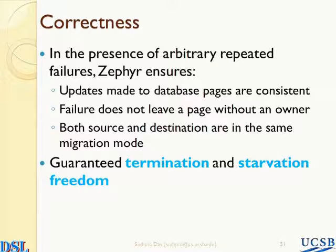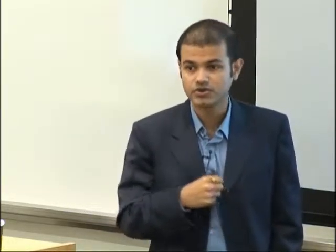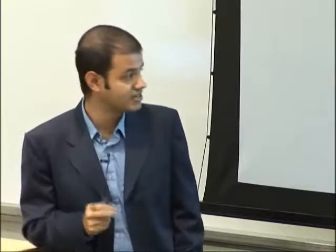In the paper, we show how you can rely on transaction semantics to capture migration information, make it persistent, and recover it. Essentially, we show that in the presence of arbitrary repeated failures, we can guarantee updates made to a database page are consistent. Failures do not leave a page without an owner, and both the source and the destination are in the same migration mode. We also show how you can guarantee termination and starvation freedom in the presence of arbitrary failures.